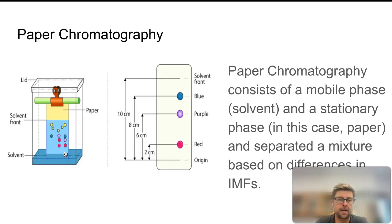The ones that are more attracted to the paper will not climb up as far. So it's a competition between the solid phase which is the paper and the mobile phase which is the solvent, and that solvent could be water or acetone or alcohol. There are a lot of different liquid combinations you can use.